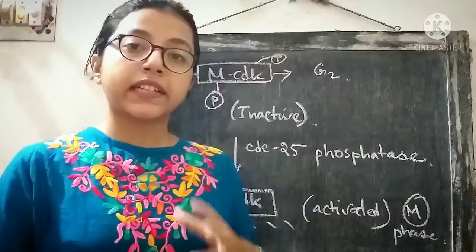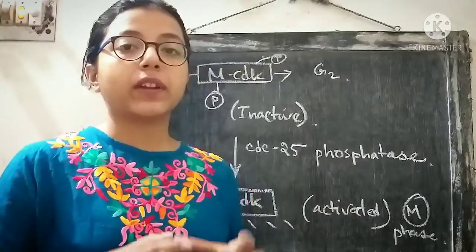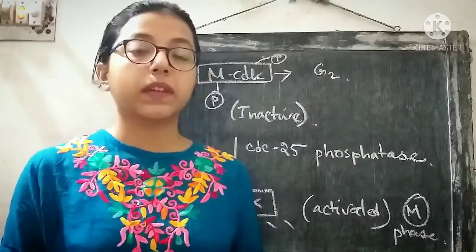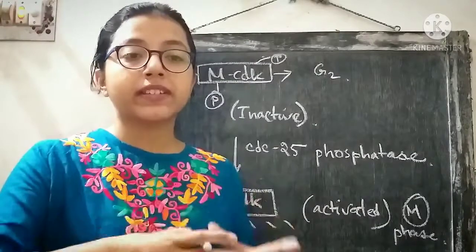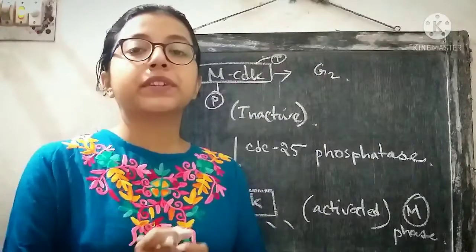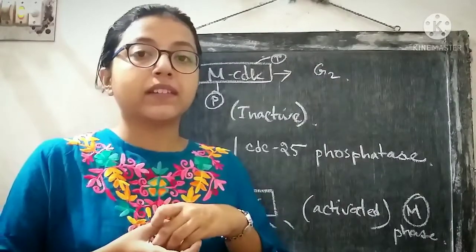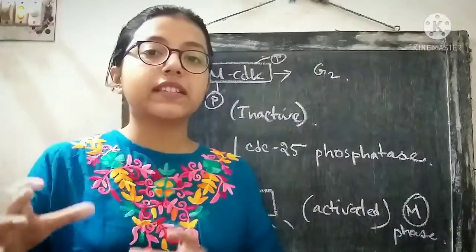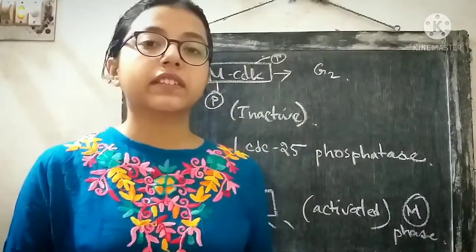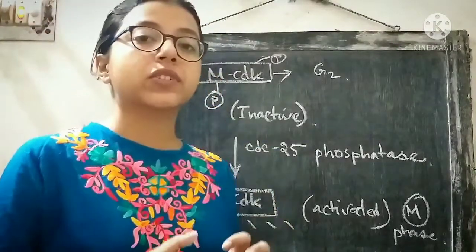MCDKs are kept inactivated when their functions are not required. We have learned about how phosphorylation and dephosphorylation can prevent the activation of some cyclin-CDK complexes. This kind of phosphorylation that prevents activation of a CDK is called inhibitory phosphorylation, meaning phosphate groups are attached to the protein in a manner that prevents activation of that cyclin-CDK complex. MCDKs are kept inactivated in the cell cycle by inhibitory phosphorylation.